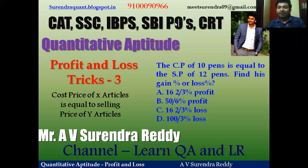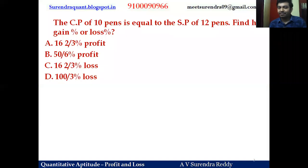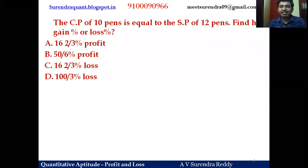Hey all, welcome to Learn QB. In this video we will try to explain how to solve questions when CP to SP ratio applications are here. The first question: the CP of 10 pens is equal to the SP of 12 pens — find the gain percent or loss percent.